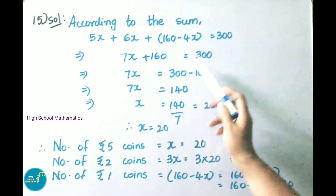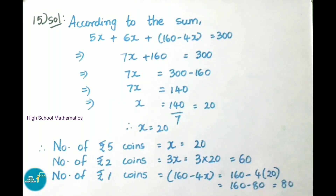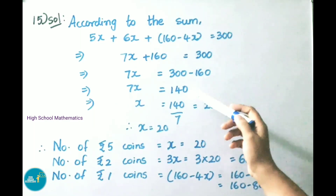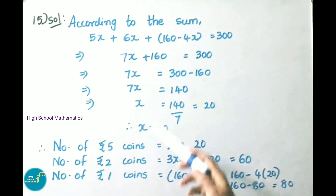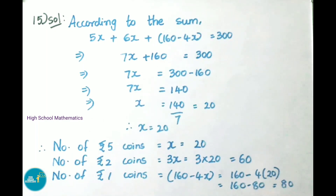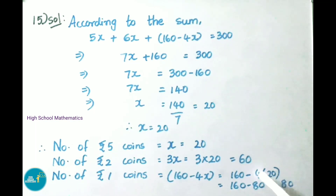7x equals 300 minus 160, that is 140. Therefore x equals 140 divided by 7. 7 times 20 is 140. Therefore x is 20. Number of 5 rupee coins is x, that is 20. Number of 2 rupee coins is 3x, that is 3 times 20, which is 60 coins. Number of 1 rupee coins is 160 minus 4 times 20, that is 160 minus 80, which is 80 coins.